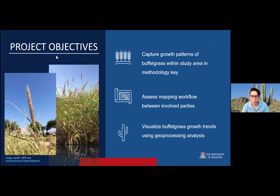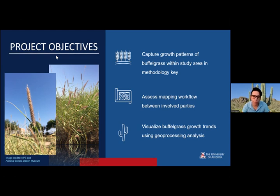For the project objectives, we've broken it down into three sections. First, using Google Earth Pro, we captured the growth patterns of buffelgrass within the study area using a grid system, referencing a visual key pre-determined by the Sonoran Desert Museum. Second, we assessed the mapping workflow between involved parties through routine meetings and workflow management. And lastly, using ArcGIS Pro, we visualized the buffelgrass growth trends using geoprocessing tools that will also allow us to develop analytical data to do a contingency analysis.